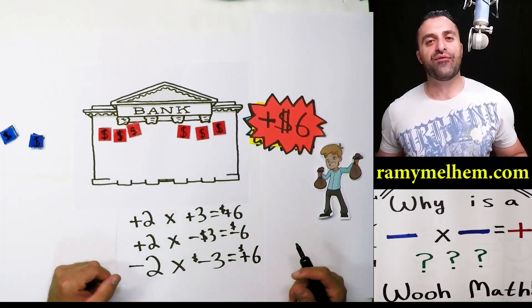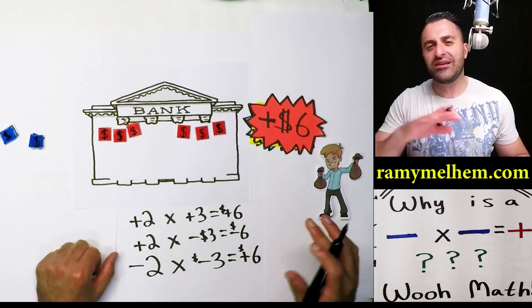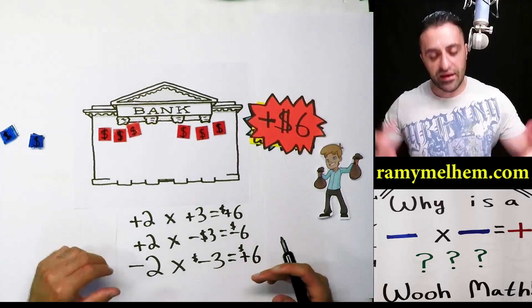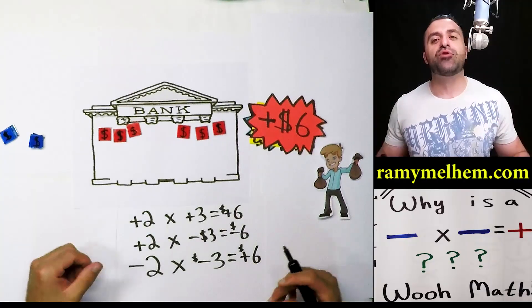He got richer — negative two times negative three is positive $6. That's why this stuff works. Don't memorize silly rules that you're going to forget — this is the real deal. This is why it works, and this is why I love teaching this stuff.